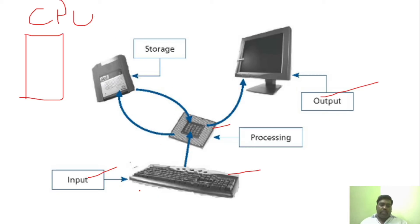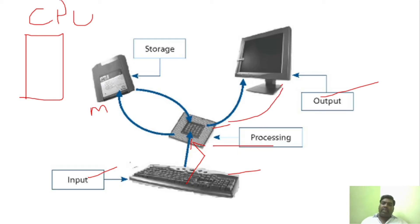Whatever input you give will be accepted through the keyboard and given to the processor. If needed, you can store that information in the memory as well. Those particular inputs are then executed and processed in the processor, and the output is given to the output device on the monitor. If the output needs to be stored for future reference, you can also store that information in the memory.